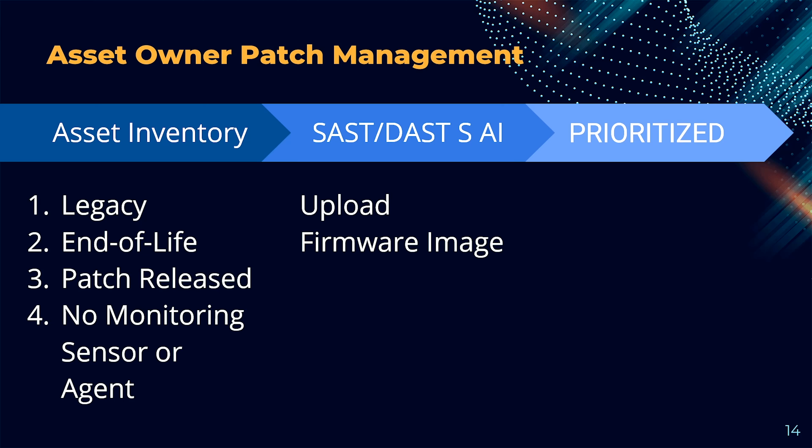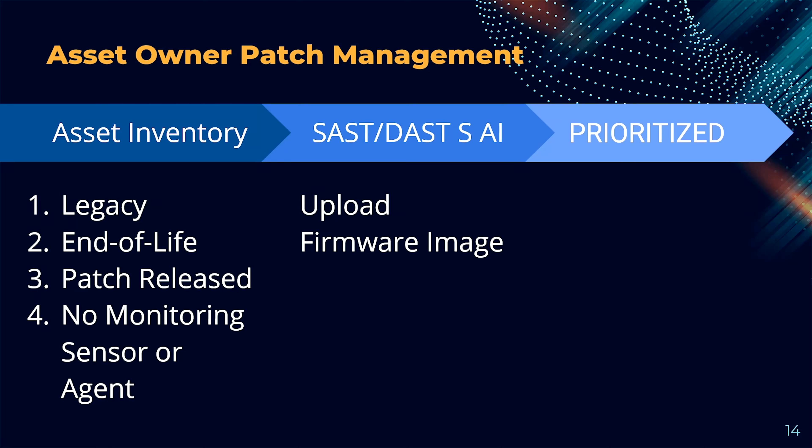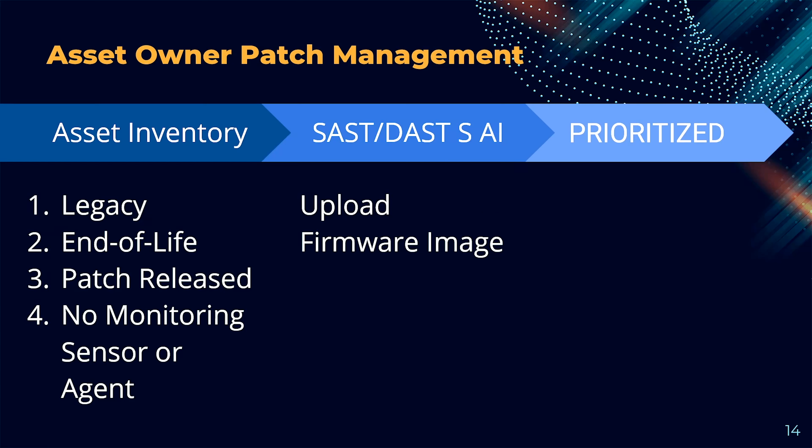Here are a couple of suggested workflows. First, if you are an asset owner — about 20% of you — a great workflow is looking at your legacy or end-of-life devices, those you do not have monitoring on, with no sensor or agent. You may have a patch still waiting in queue. What we're suggesting is: don't completely trust that patch. Run it through analysis to see if it introduces net-new vulnerabilities or if there's another version you should install instead. Then run it through the hybrid static-to-dynamic symbolic AI for firmware image analysis.